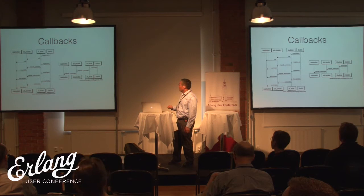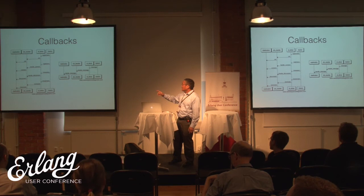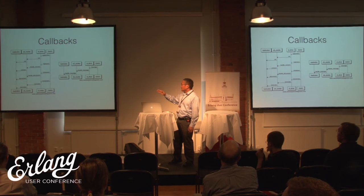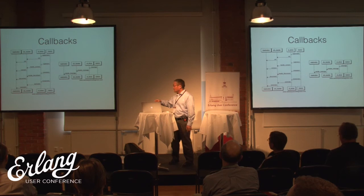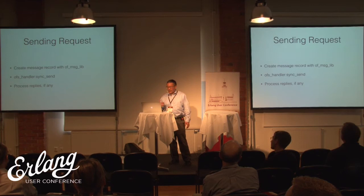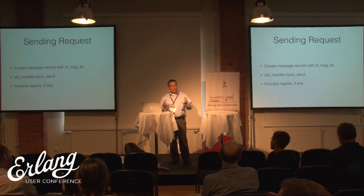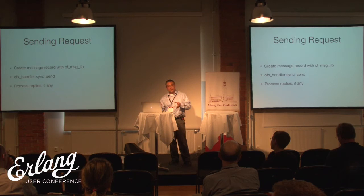The flow on the left shows the login and the names of the callback functions — what happens when the auxiliary connection closes and what happens when the main connection closes. The flow on the right shows a message being received from the switch and being passed through the handle_message callbacks. To send a message, the easiest thing to do is to use OFMessageLib to create the record representing the message. This uses a version-specific OFProtocol header file that has all the record definitions in it. Because record names are common across all versions of the header files for different OpenFlow protocol versions, they can't be included at the same time — which is why we have this extra layer.